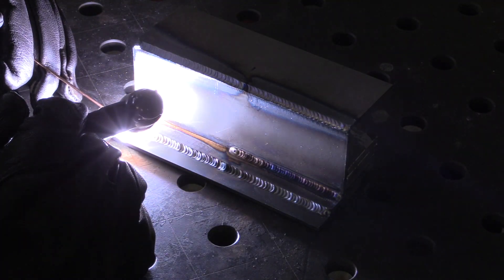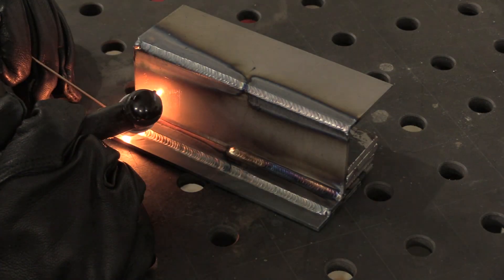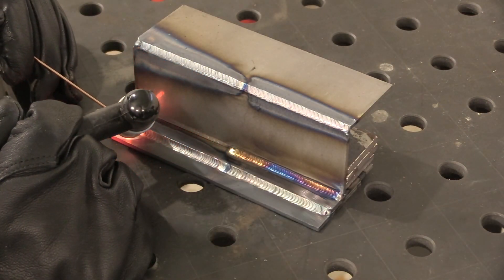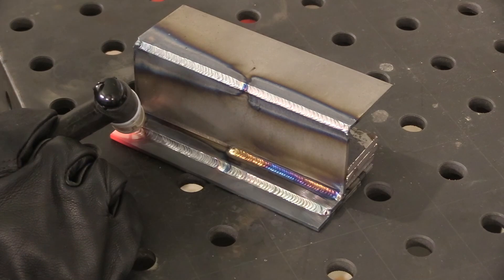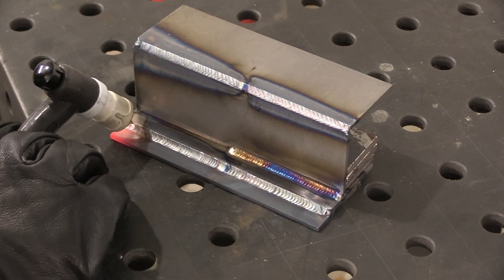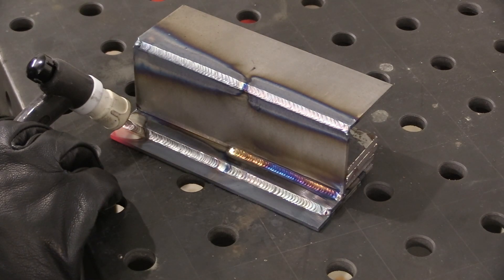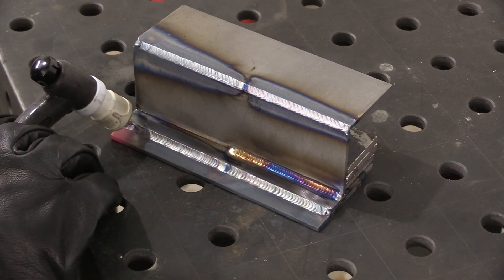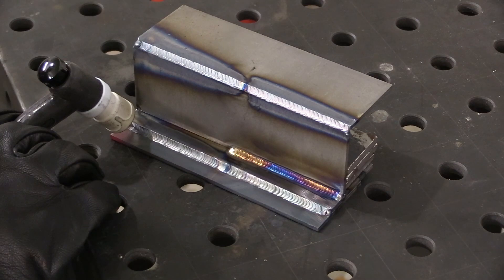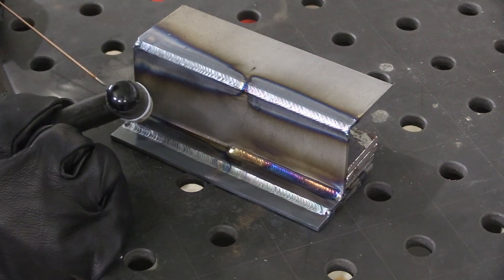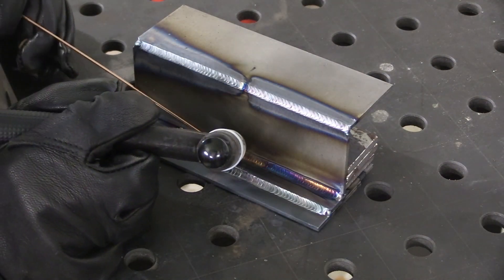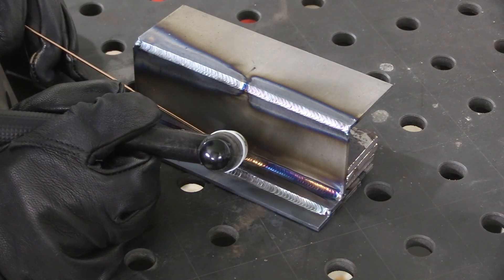Then when your torch angle gets bad or you're just uncomfortable or you have to sneeze, you're not hesitant to stop because you know you can make a good restart. Even though I'm not going to restart here, I'm just in the habit of holding that post flow until it times out. All right, well let's do that last half of the T joint now and take a close look at that restart.